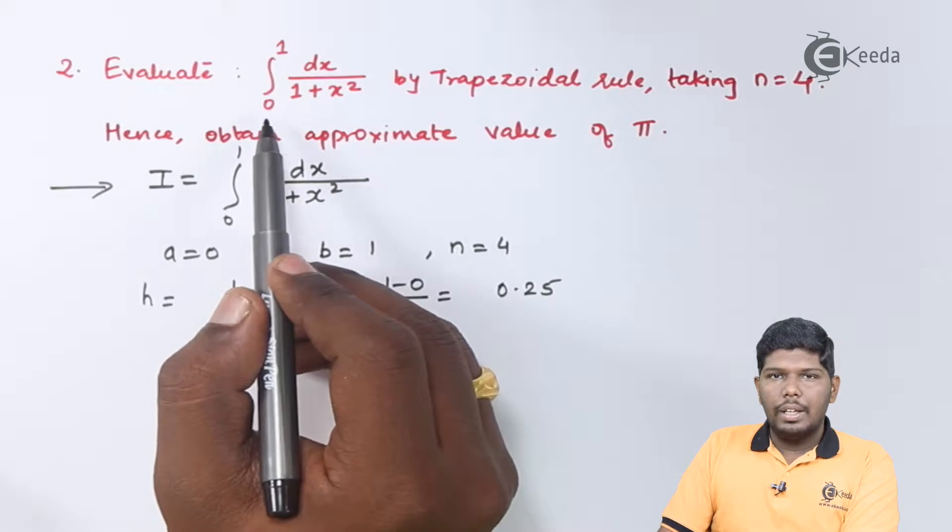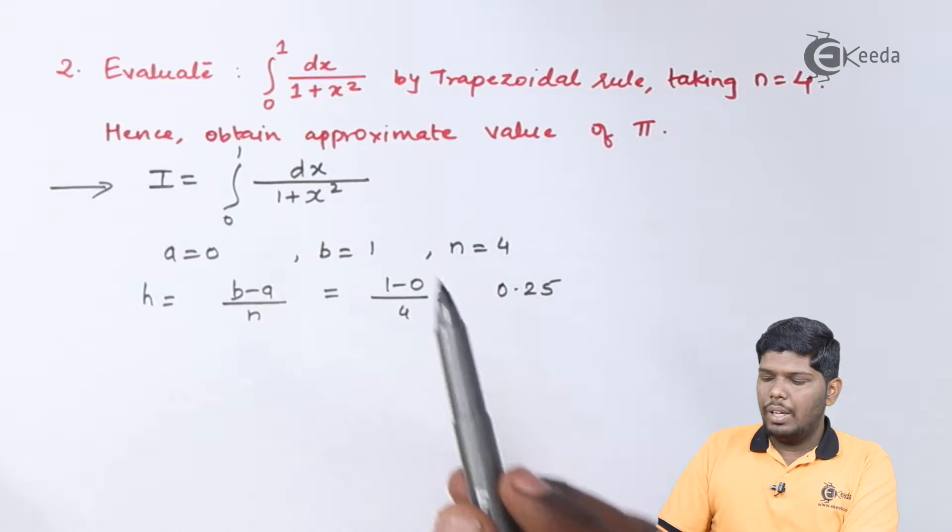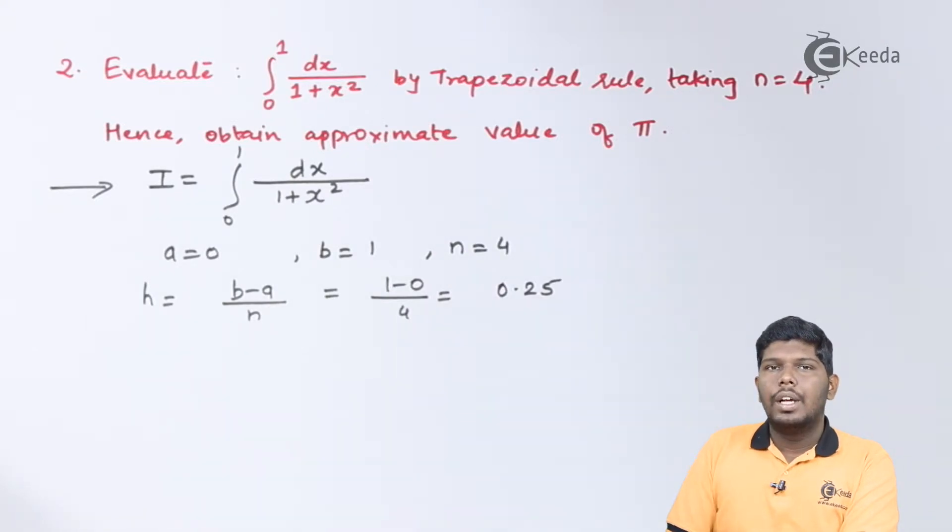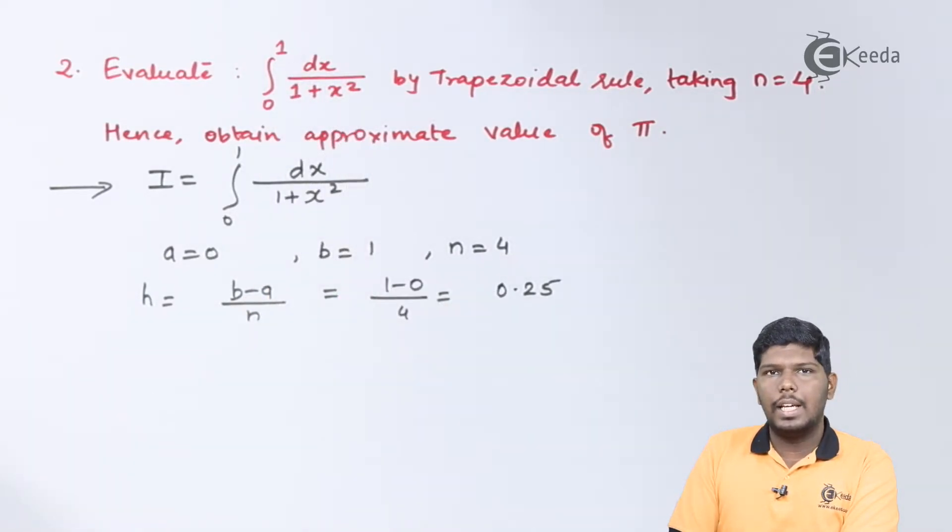So, the lower limit of 0 to 1 will be divided in 4 different steps. And each one will have a difference of 0.25. Now, let us prepare the table in which the first column will represent the values of x. And the second column will represent the value of the function, that is 1 upon 1 plus x square.